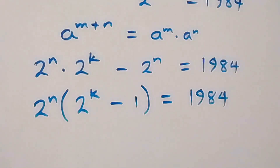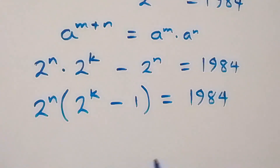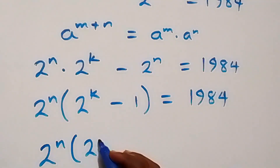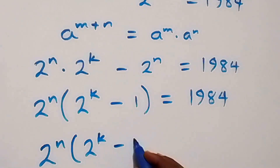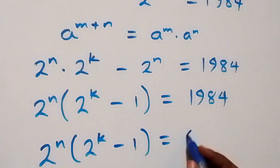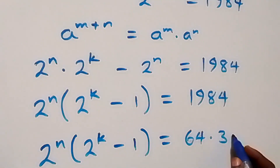You are watching My Study Math Class. If you are enjoying this class, please give a thumbs up and subscribe to my channel. Now, let's separate one thousand nine hundred and eighty-four as 64 times 31. So we have 2 raised to power n times (2 raised to power k minus 1) equals 64 multiplied by 31.